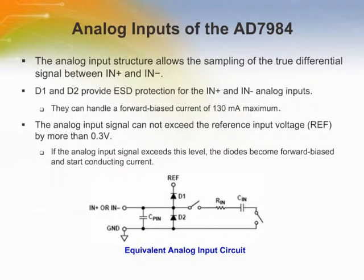These diodes can handle a forward biased current of 130 milliamps maximum. However, if the supplies of the input buffer are different from those of REF, the analog input signal may eventually exceed the supply rails by more than 0.3 volts. In such a case, for example an input buffer with a short circuit, the current limitation can be used to protect the part.